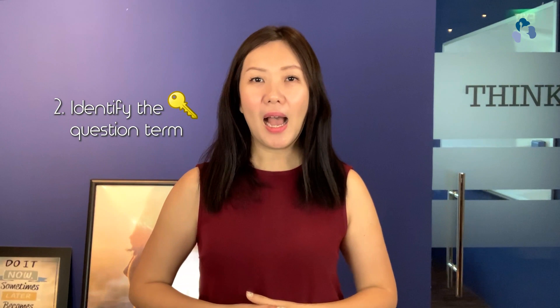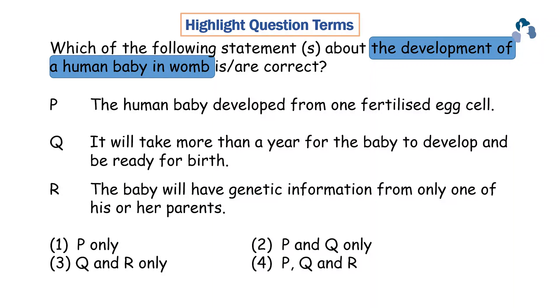Have you done that? Great! Now let's move on to the second strategy: identify the key question term. Just like the open-ended question, every question has a key question term. If your child is already doing that for the open-ended question, this strategy would be an ease for your child. Same thing — use your highlighter and highlight the key question term. You must definitely understand what the question is asking for.